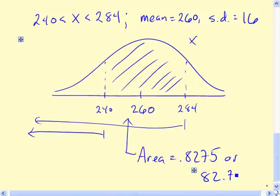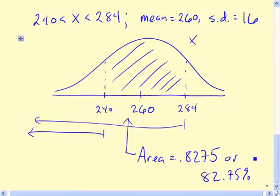So we're talking 82.75% of pregnancies are somewhere between 240 and 284 days. So what? 4 out of 5, roughly.